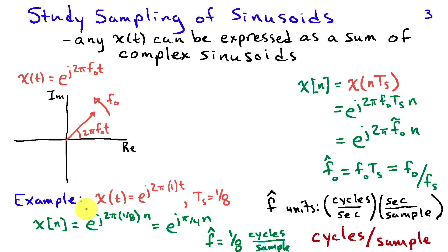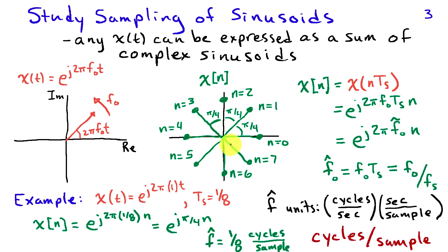For a specific example, let x(t) = e^(j2π·t), so f0 = 1, with sampling interval T_s = 1/8 second. This gives x[n] = e^(j2π·(1/8)·n) = e^(jπ/4·n), with discrete time frequency f-hat = 1/8 cycles per sample. In the complex plane, at n=0 we start on the real axis, then at n=1 we move to angle π/4, at n=2 another π/4 radians, and so on — there are exactly eight samples in one cycle.